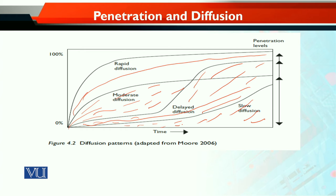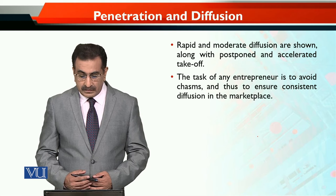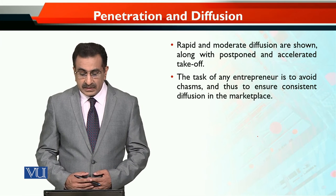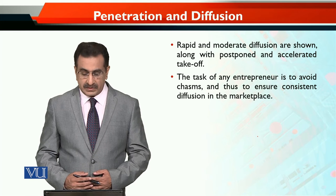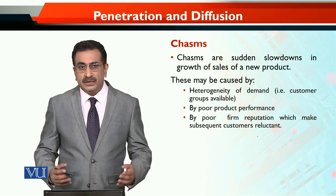Groups may resist because of their present infrastructure compatibility, or because they have already invested in existing applications. But if the technology is innovative and useful, it eventually succeeds in penetrating various groups, as discussed in the technology adoption model. There is rapid and moderate diffusion, along with postponed and accelerated takeoff. The task of any entrepreneur is to avoid CASB and thus ensure consistent diffusion in the marketplace.